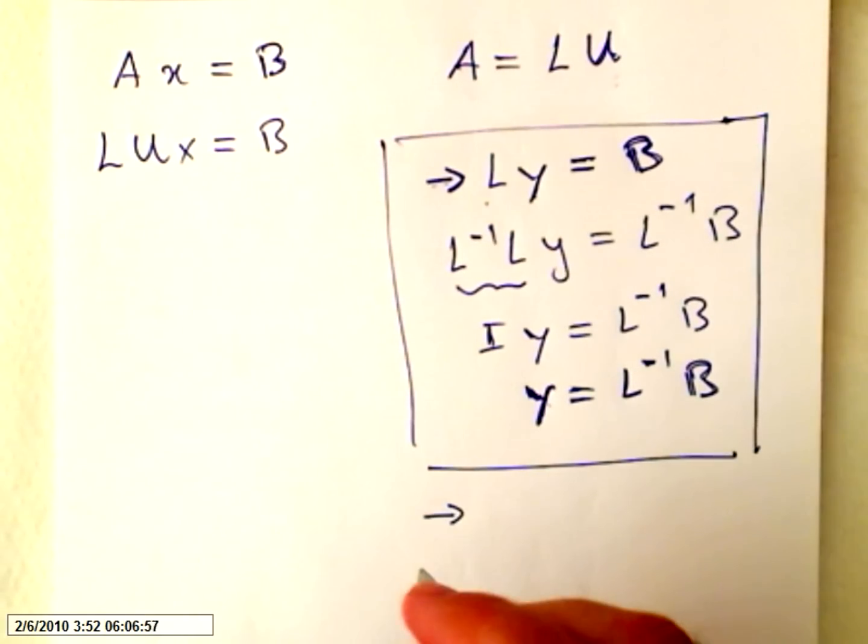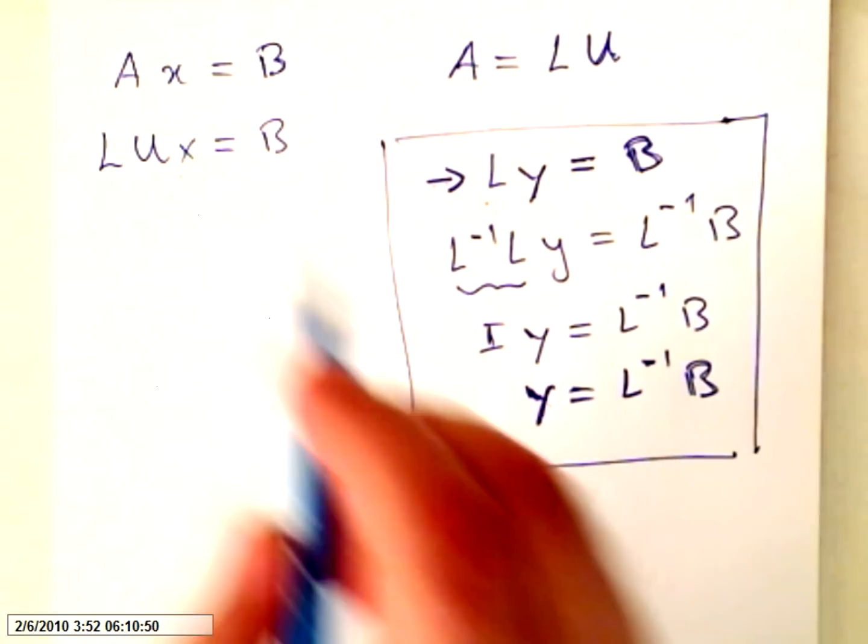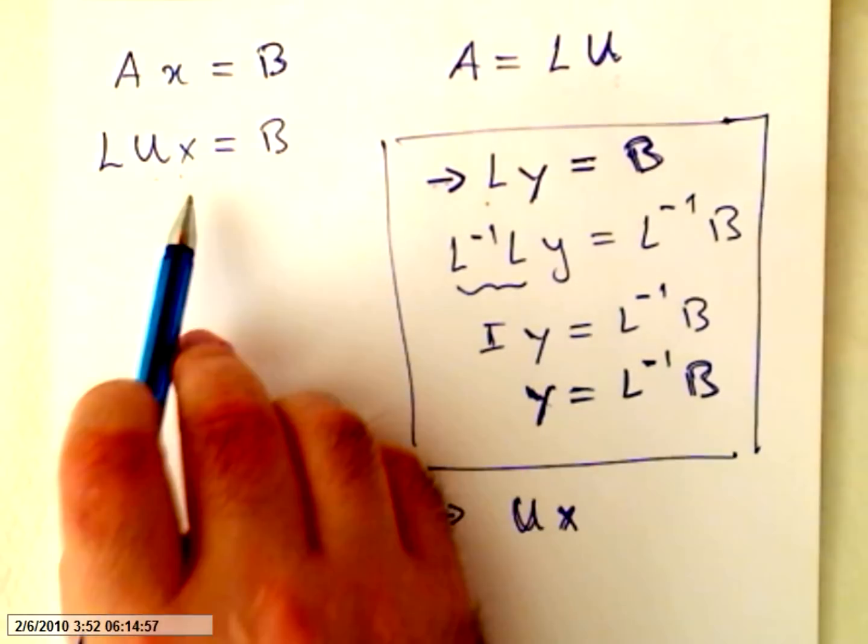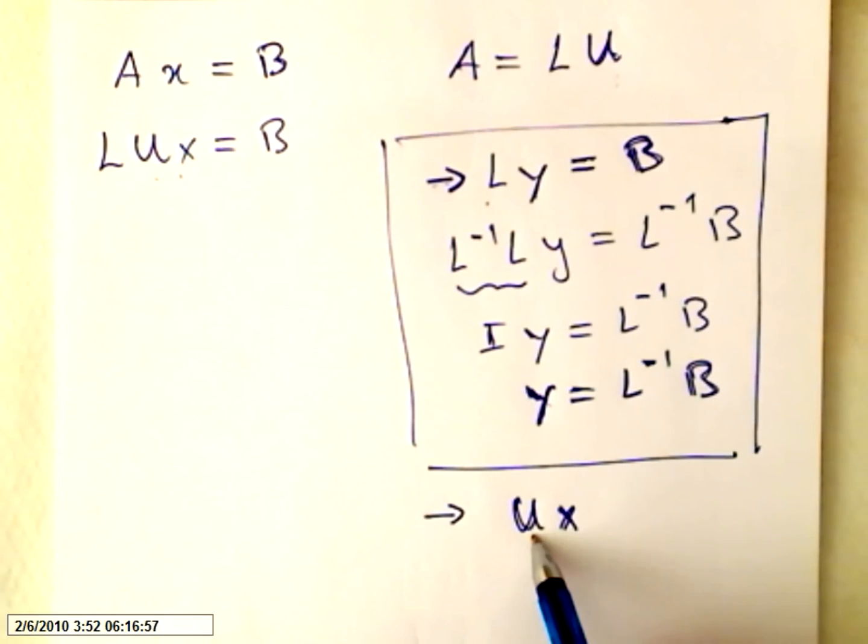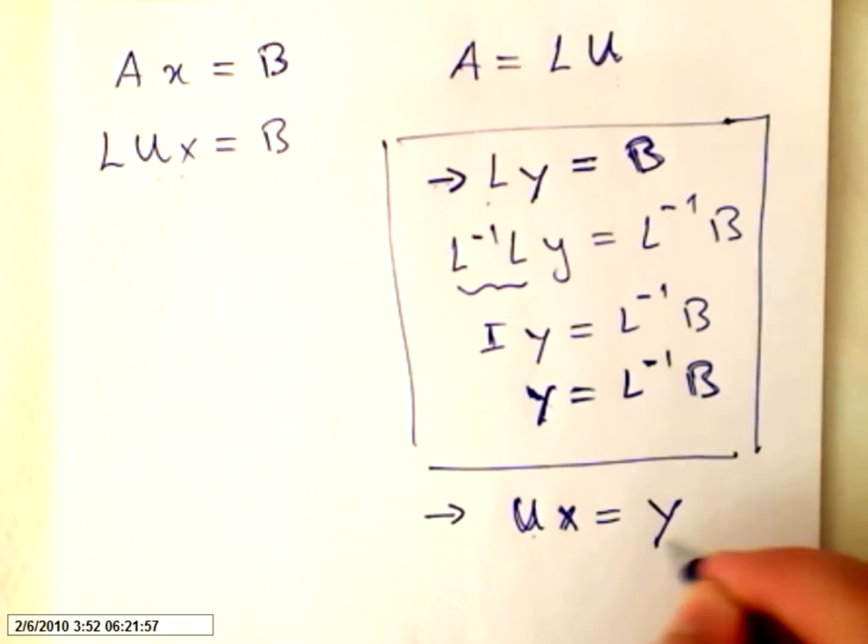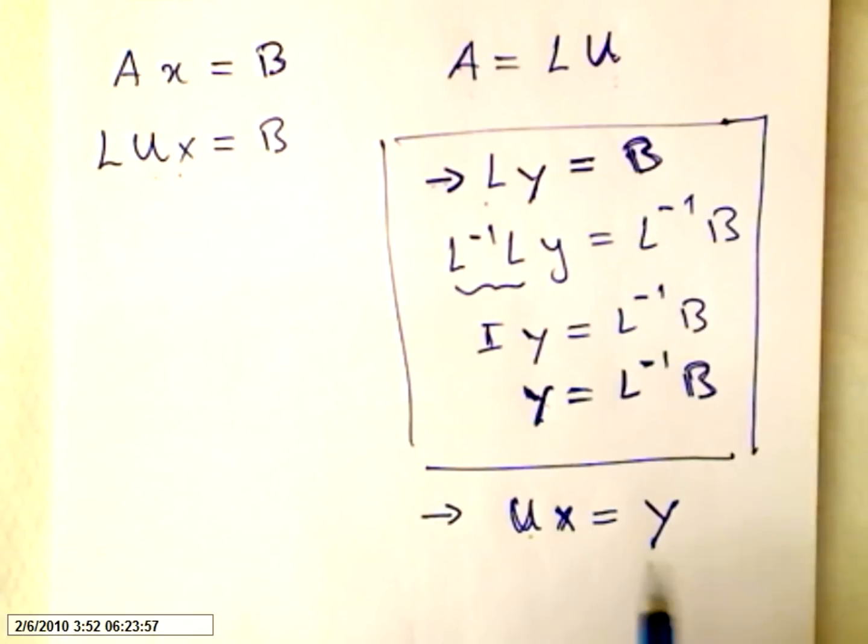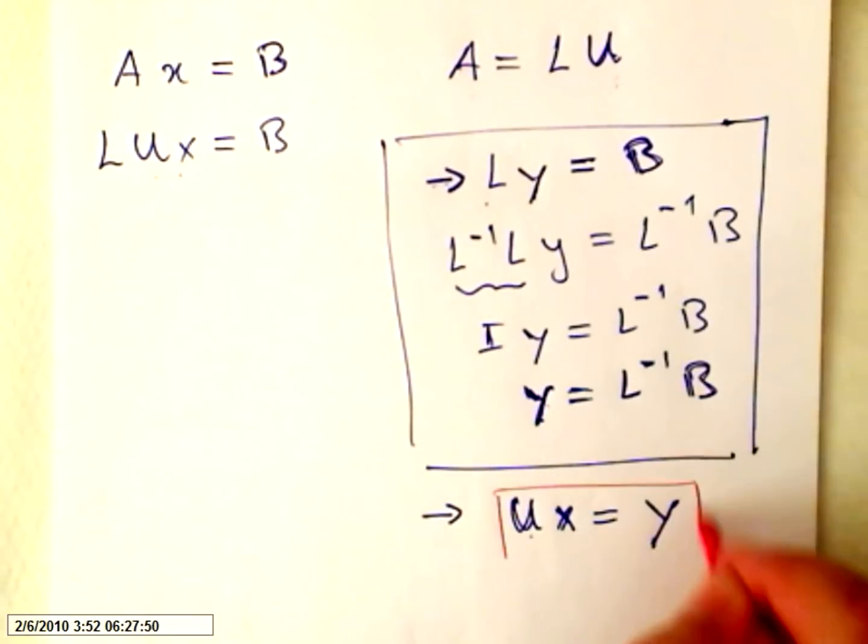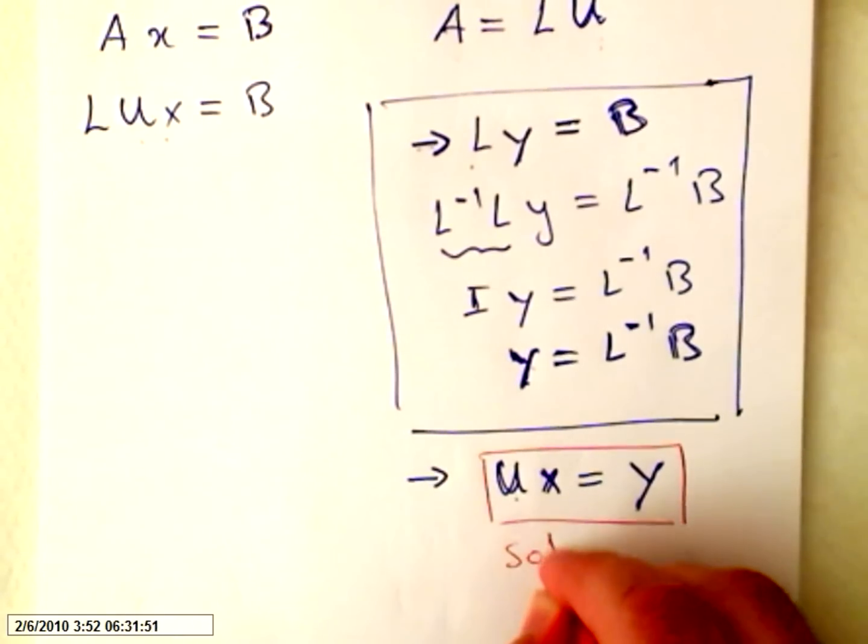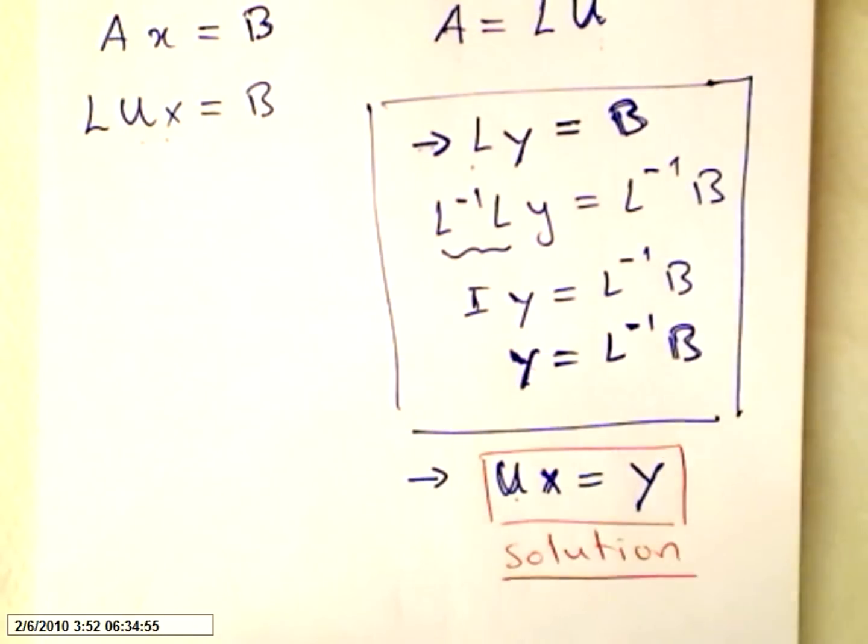This is only me showing you what Y is or making Y the subject. So your first step is to find LY equals B. Your second step and final step will be to find UX equals Y. When you do this, you will get, when you do this step, you will get the solution. This will be your solution.